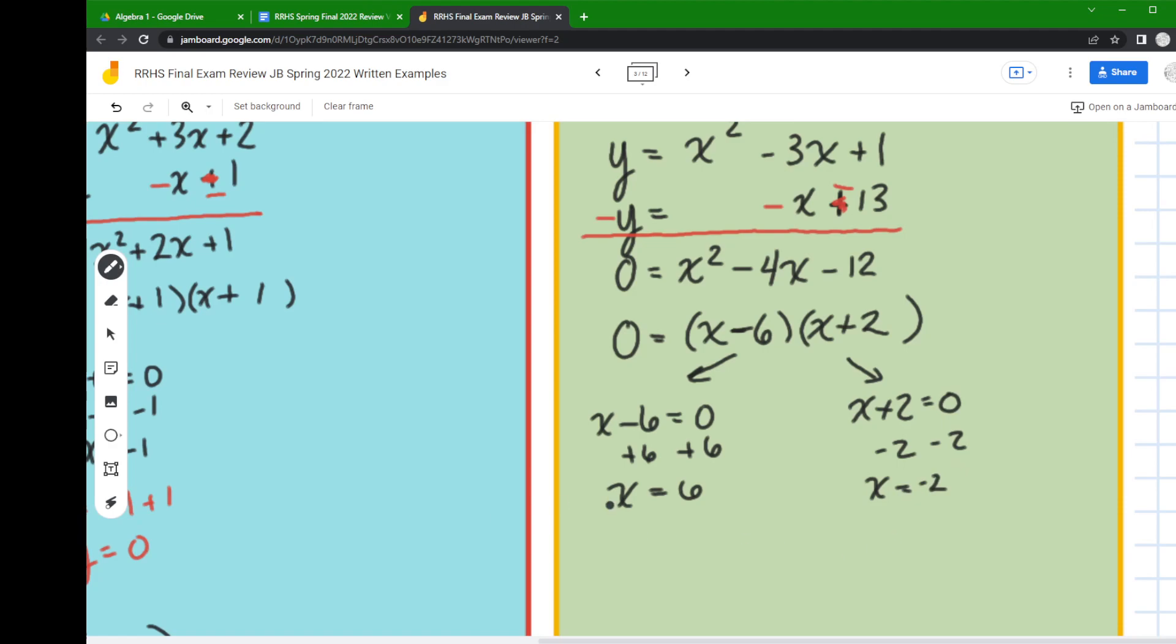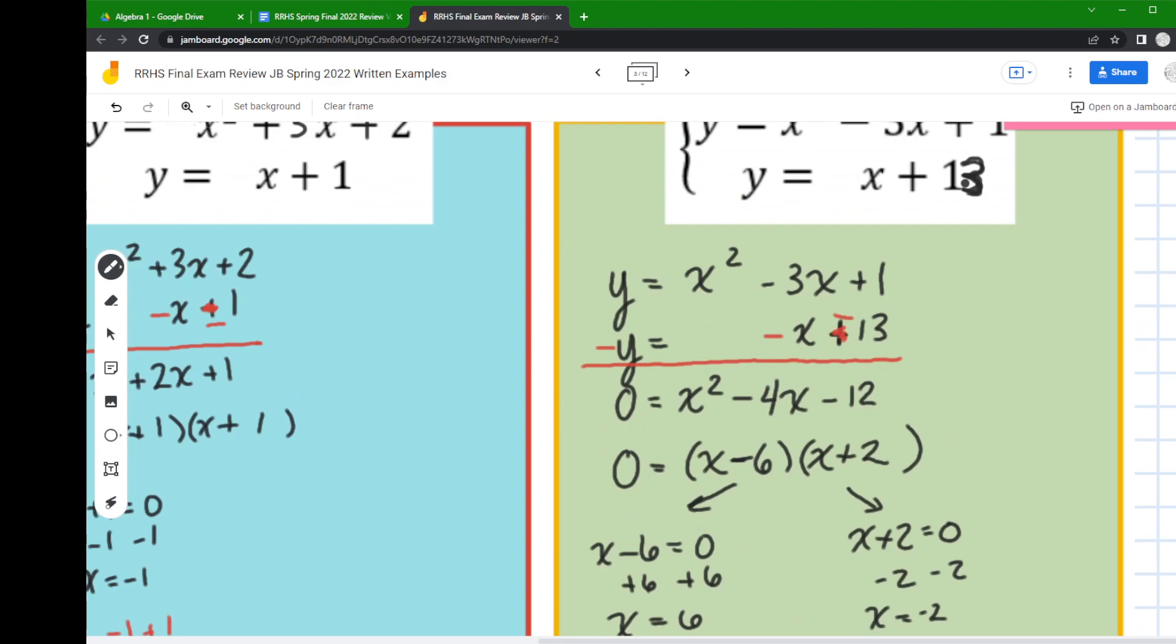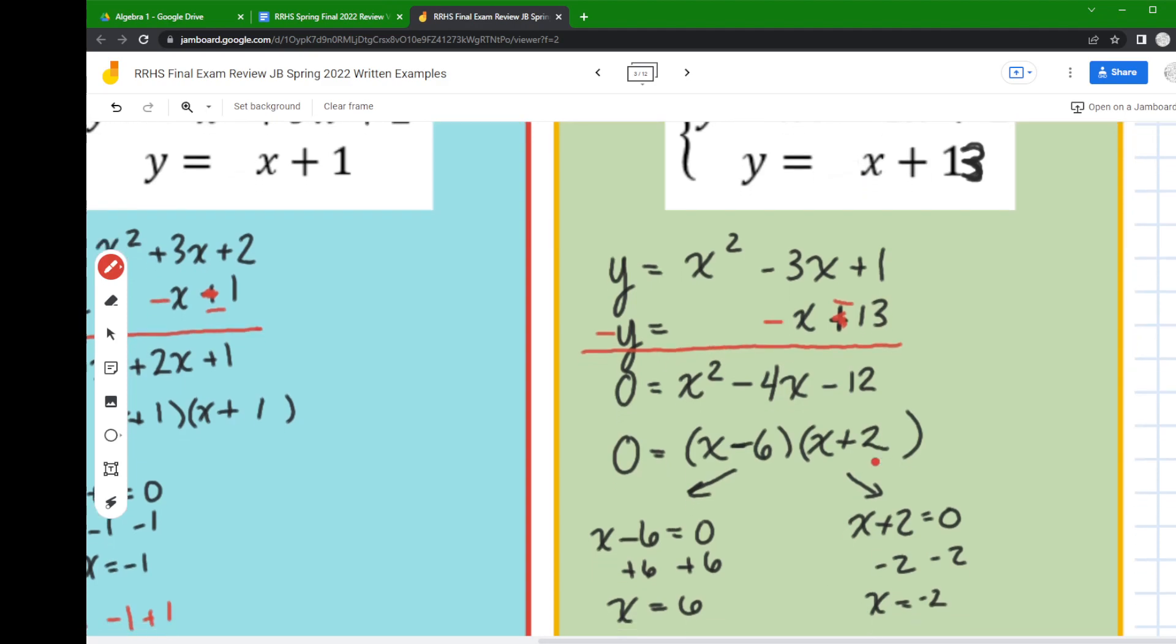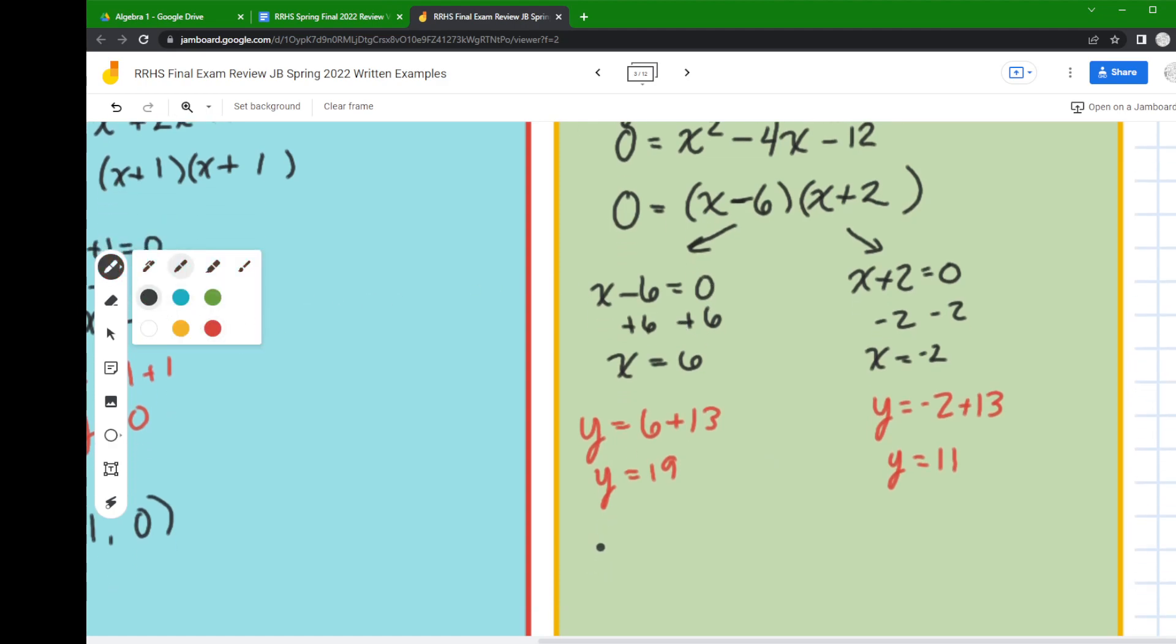So then our last step, we have our x's so now we need our y's. So we're going to go back to that linear equation and where the x is I plug in these numbers. So I'm going to have y equals 6 plus 13 and y equals negative 2 plus 13. So here I get a 19 for y and here I get an 11. So my final answers, my final ordered pairs, are going to be (6, 19) and (-2, 11).